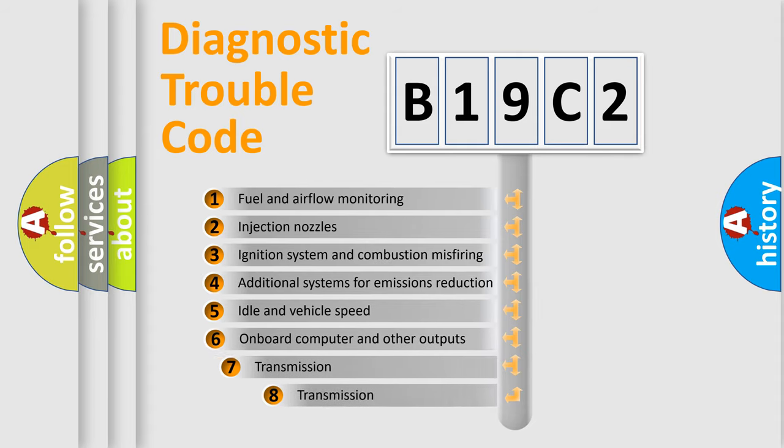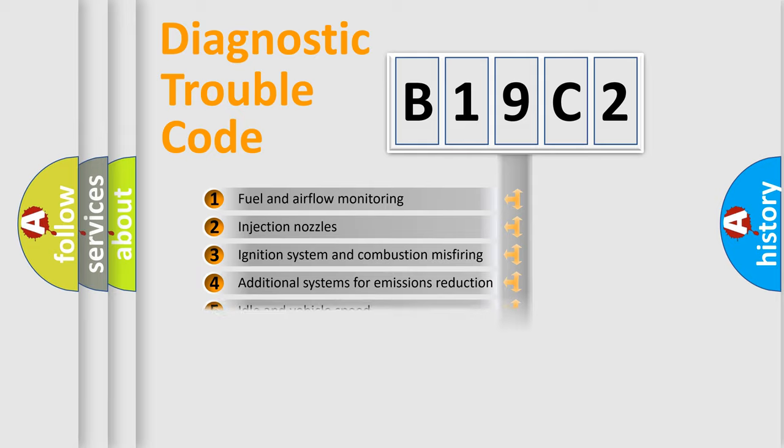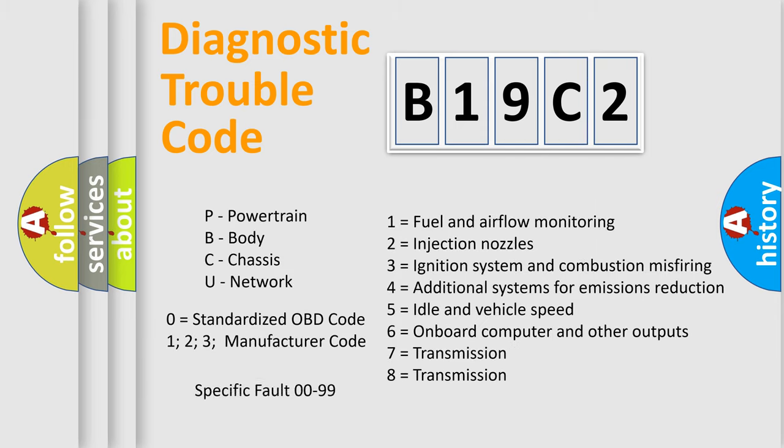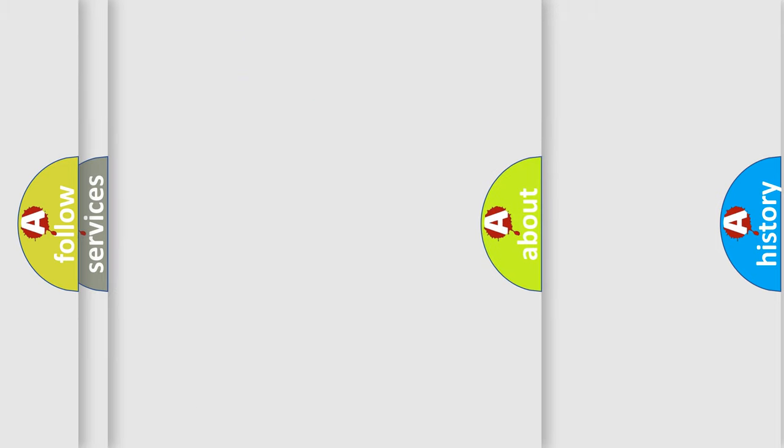The third character specifies a subset of errors. The distribution shown is valid only for the standardized DTC code. Only the last two characters define the specific fault of the group. Such a division is valid only if the second character code is expressed by the number zero.